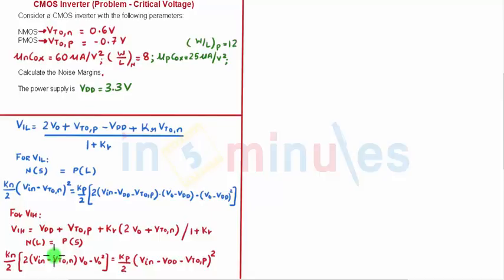Now it's a straightforward problem. We know that for a CMOS inverter VOL is equal to 0 volts and VOH is equal to VDD which is equal to 3.3 volts. So now the problem is left in finding just VIL and VIH.